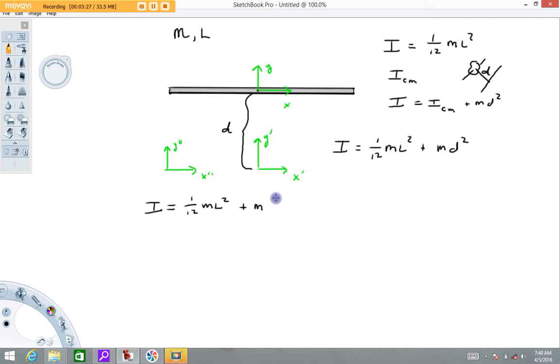now we just tack on m times this distance squared, so m times, now we want an expression for this distance. If we take a look at a triangle here, look at this triangle right here, this distance is l over 2, this distance is d, therefore this distance is d squared plus l over 2 squared. So now we just tack on a d squared plus l over 2 squared. And there we have it.